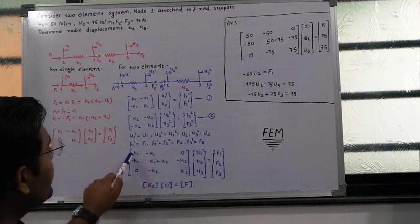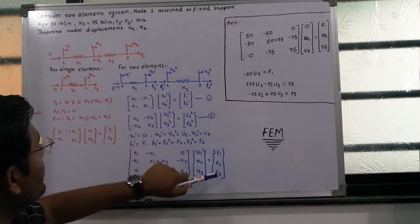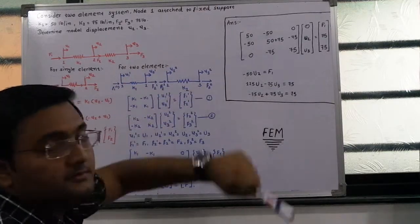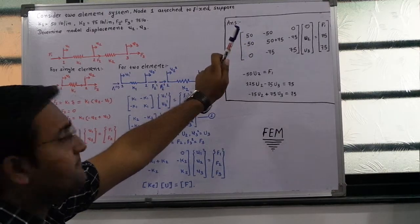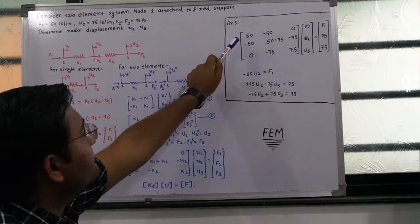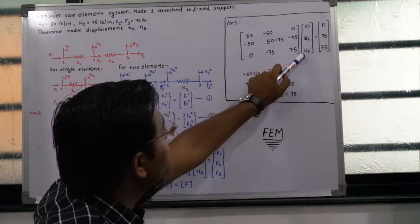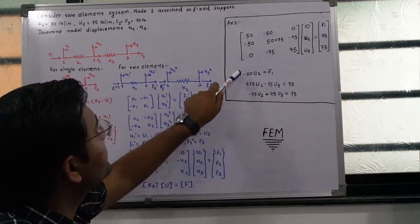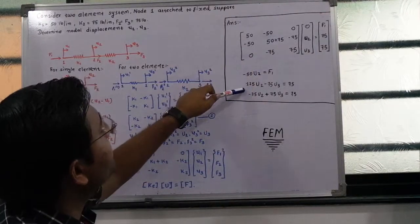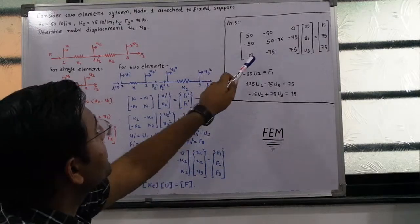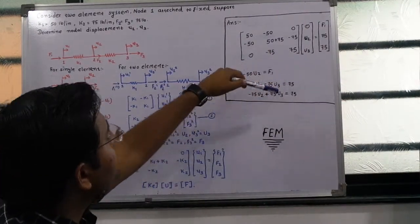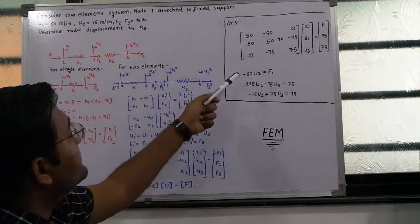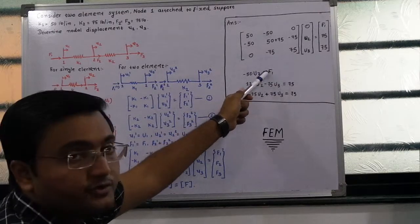Substituting K1 = 50, K2 = 75, F2 = 75, F3 = 75, and U1 = 0 (node 1 is fixed), the equations become: minus 50·U2 = F1 (first equation); 125·U2 minus 75·U3 = 75 (second equation); minus 75·U2 plus 75·U3 = 75 (third equation). With two equations and two unknowns U2 and U3, their values can be found, and subsequently the reaction force at node 1 can also be determined.